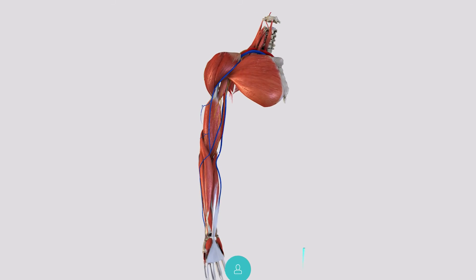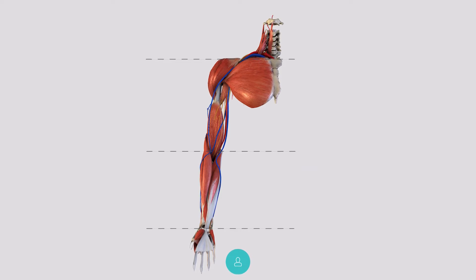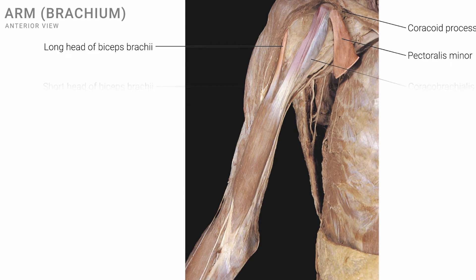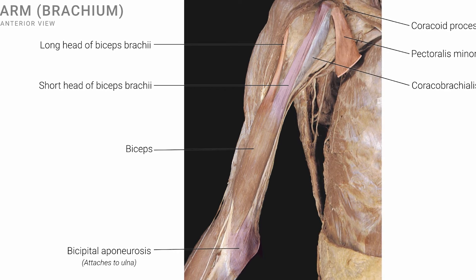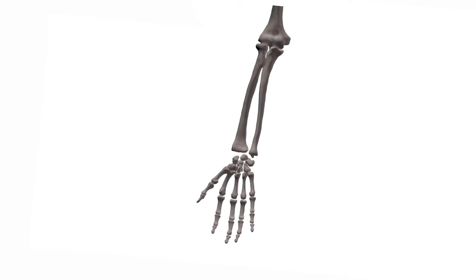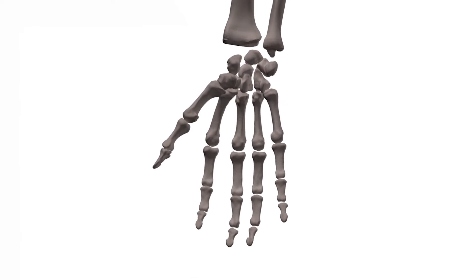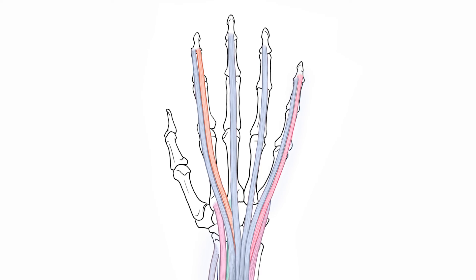In this course, we will focus on the upper limb. The upper limb is attached to the trunk and is divided into three segments. The first or proximal segment extends from the shoulder to the elbow and is called the arm. The second segment, or forearm, spans from the elbow to the wrist. And distal to the wrist, we have the third and final segment, the hand.